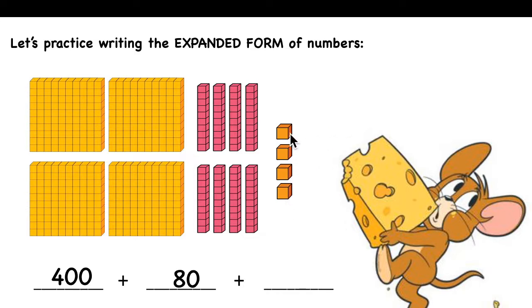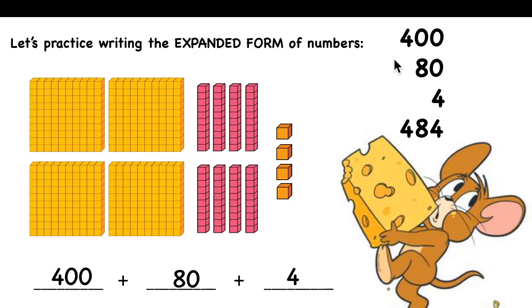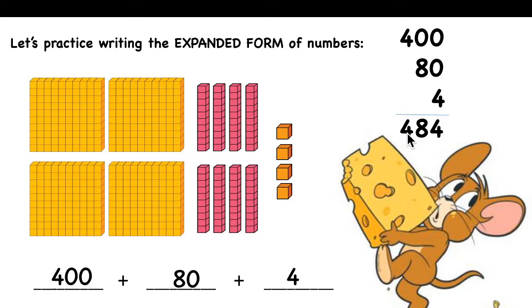And how many ones do you have? 1, 2, 3, 4. Four ones. What do we call this form? This form of a number we call expanded form. Now, if you want to write the standard form, you will take the first digits of each number. From four hundred you take 4, from eighty you take 8, and from four ones you take 4. You get the standard form — four hundred eighty four.